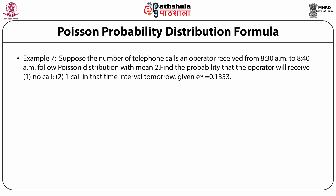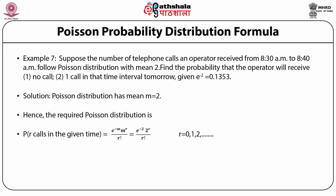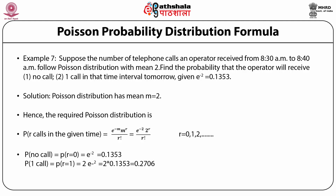Example: Suppose the number of telephone calls an operator receives from 8:30 AM to 8:40 AM follows a Poisson distribution with mean 2. Find the probability that the operator will receive (1) no calls and (2) 1 call in that time interval tomorrow. P(r=0) gives the probability of no calls received; P(r=1) gives the probability of exactly 1 call, solved using the Poisson formula with m = 2.